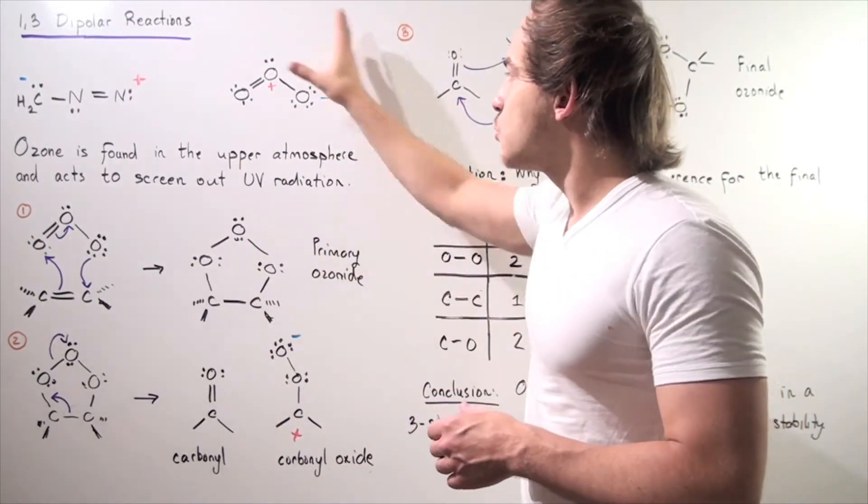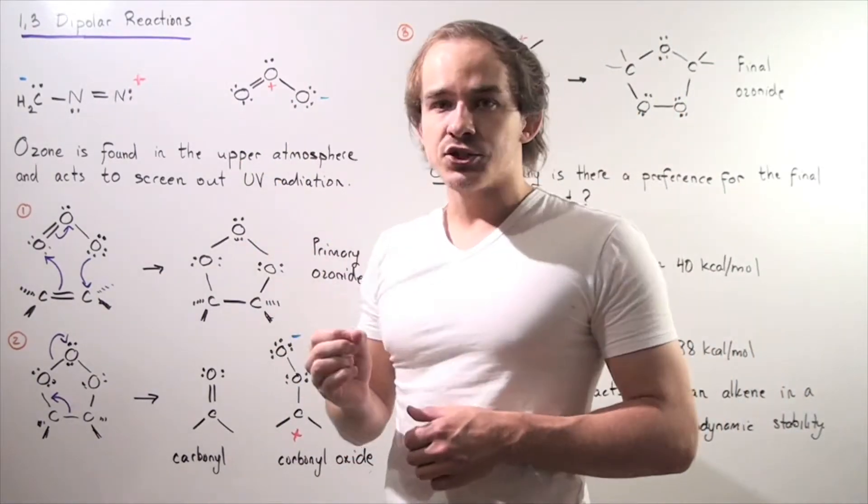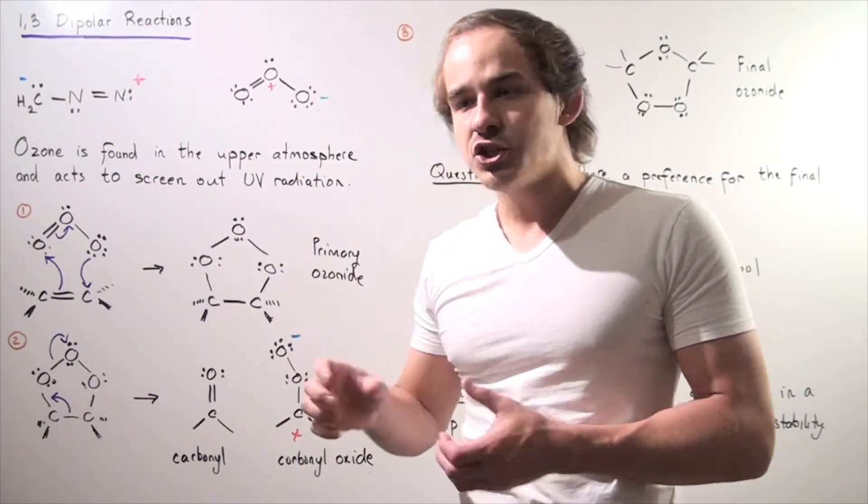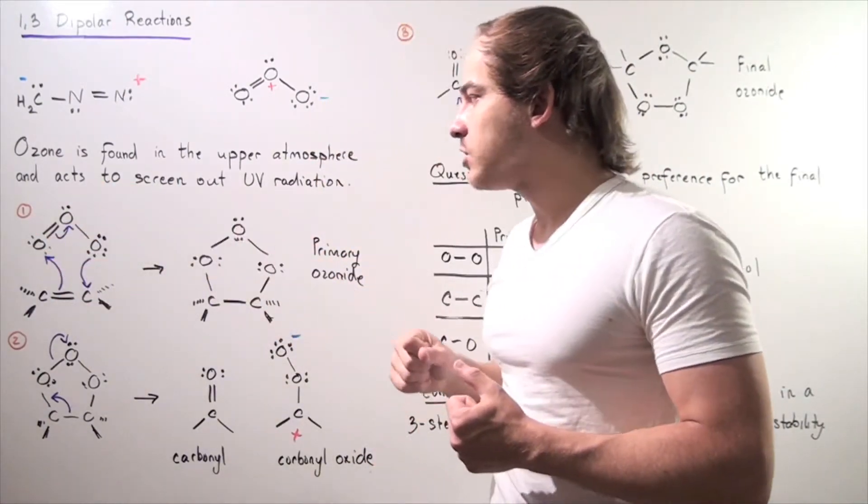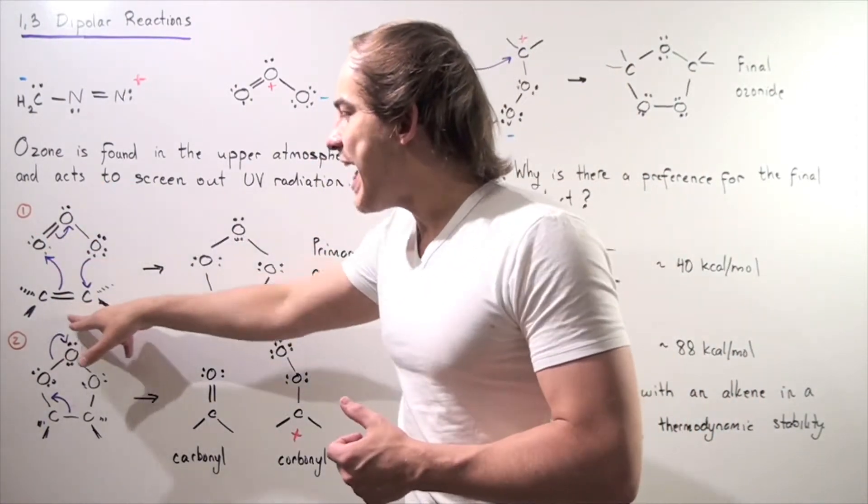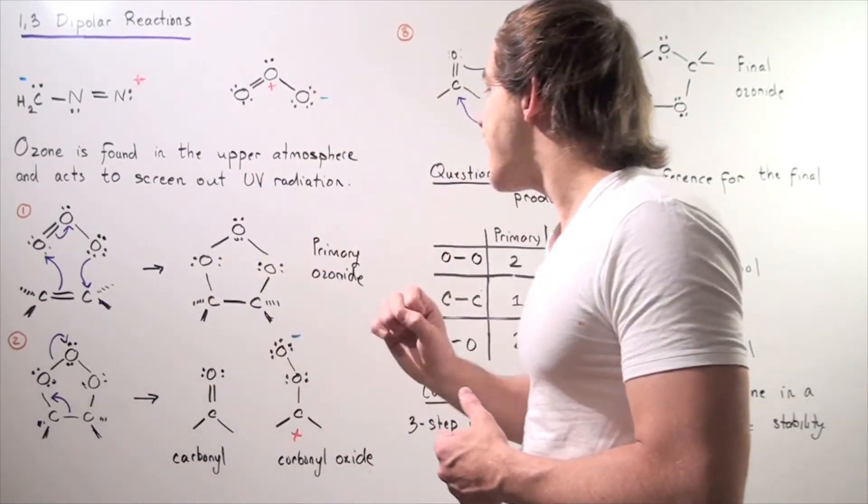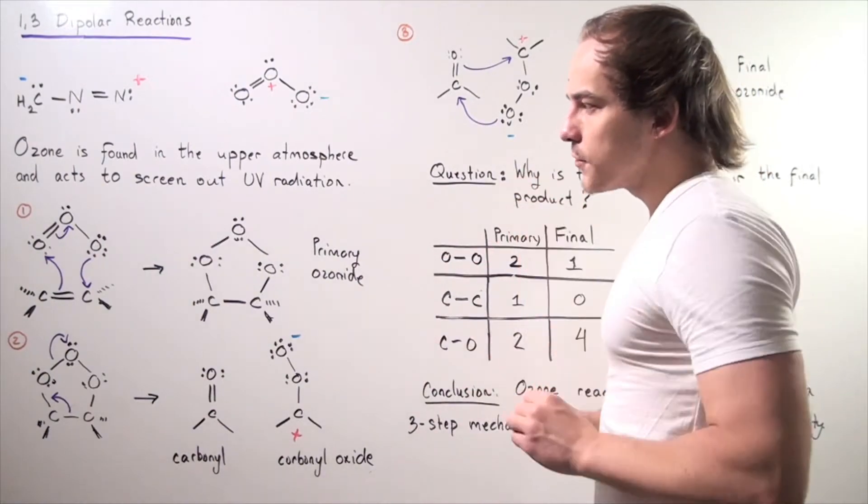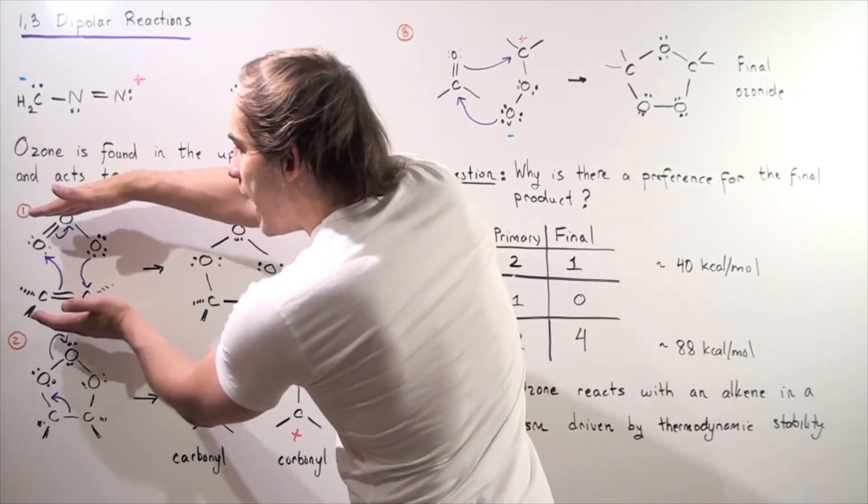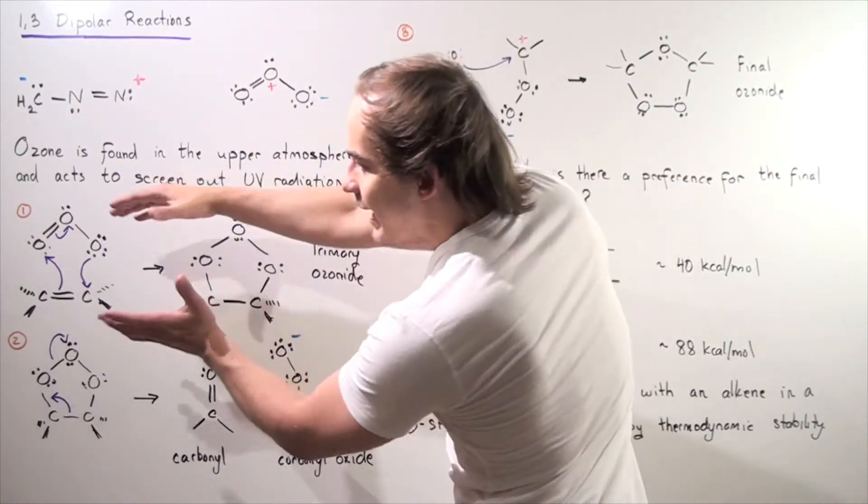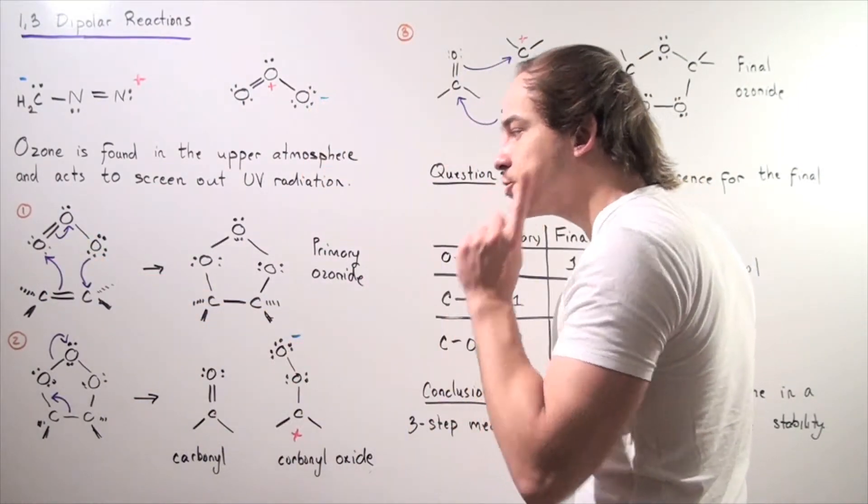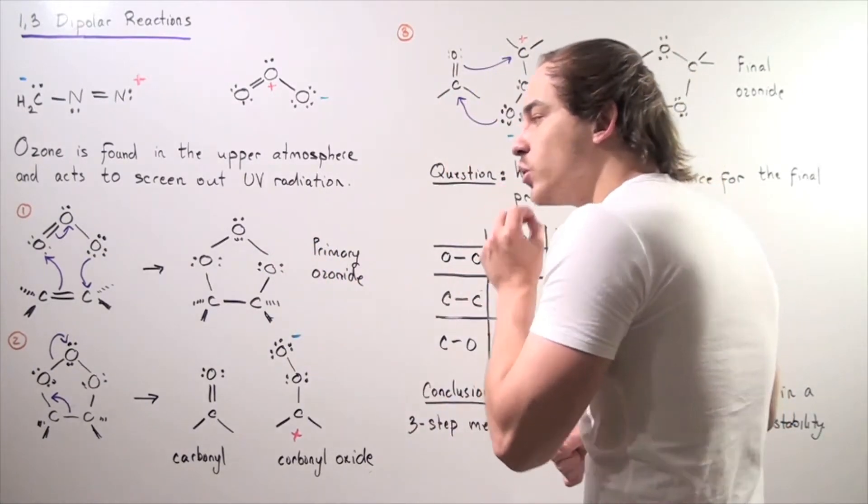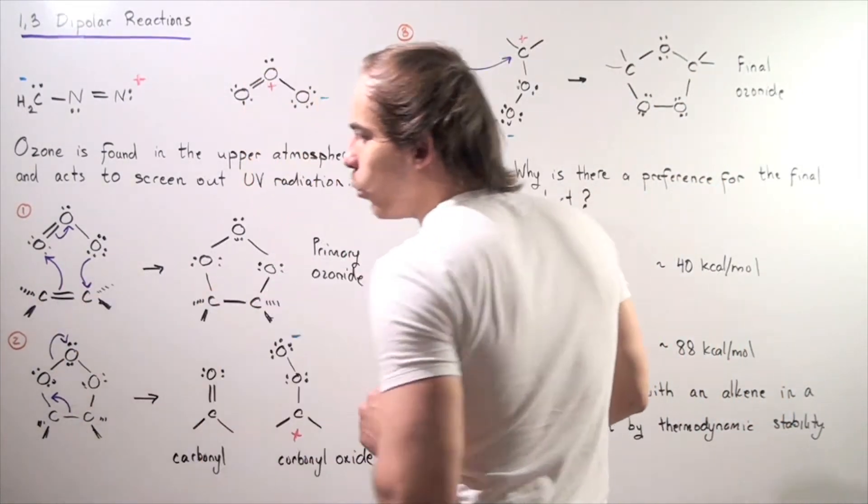So let's get back to our ozonolysis reaction. Ozonolysis is simply a 1,3-dipolar reaction in which we have the ozone molecule combining with an alkene in a three-step mechanism. So let's begin by examining our first step. In the first step, we have the two molecules, the reactants, combining in such a way in a one-step conserved mechanism to form a primary ozonide. So let's examine exactly what happens.